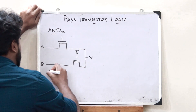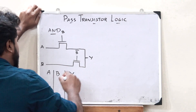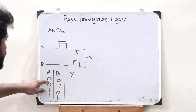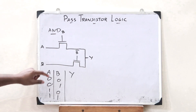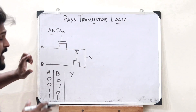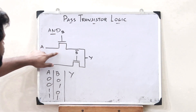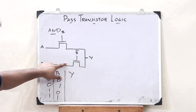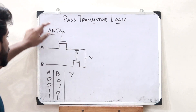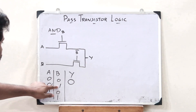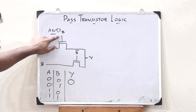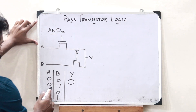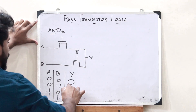Let us construct the truth table for inputs A and B with output Y. For inputs 0 and 0: B is 0 so this transistor is off, but B bar is 1 so the other transistor is on. The input at that terminal is B, which is 0, so the output is 0. For inputs 0 and 1: B is 1 so this transistor is on and the other is off. The input coming through is A which is 0, so the output is 0.